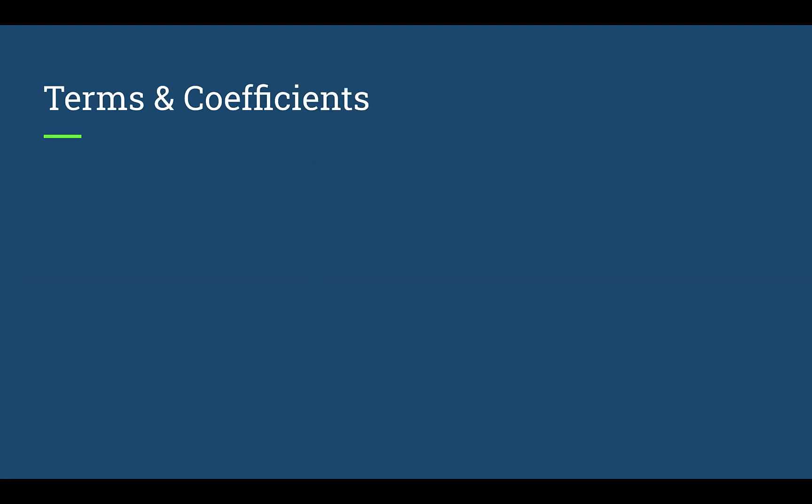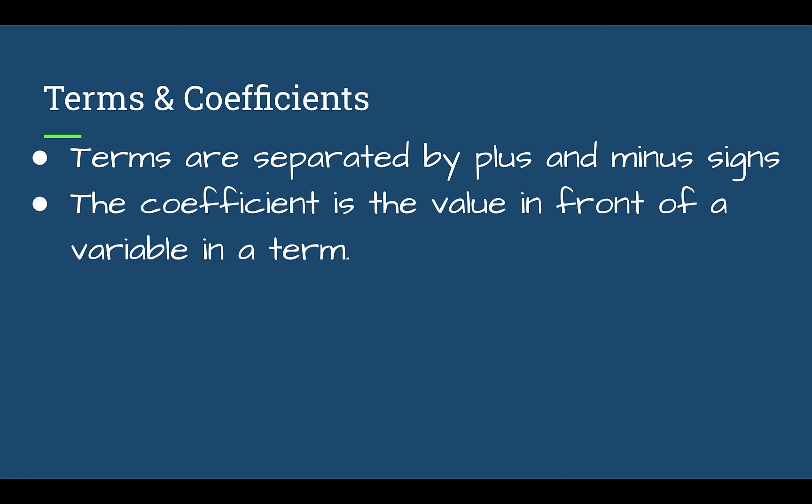So now let's talk about two other words, terms and coefficients. So terms are parts of an expression that are separated by a plus and a minus sign. The coefficient is the value in front of a variable in a term. If there is no coefficient, and I put no in quotation marks because there actually is one, the value is one. So if there's not a number in front of the variable, it's actually a one.